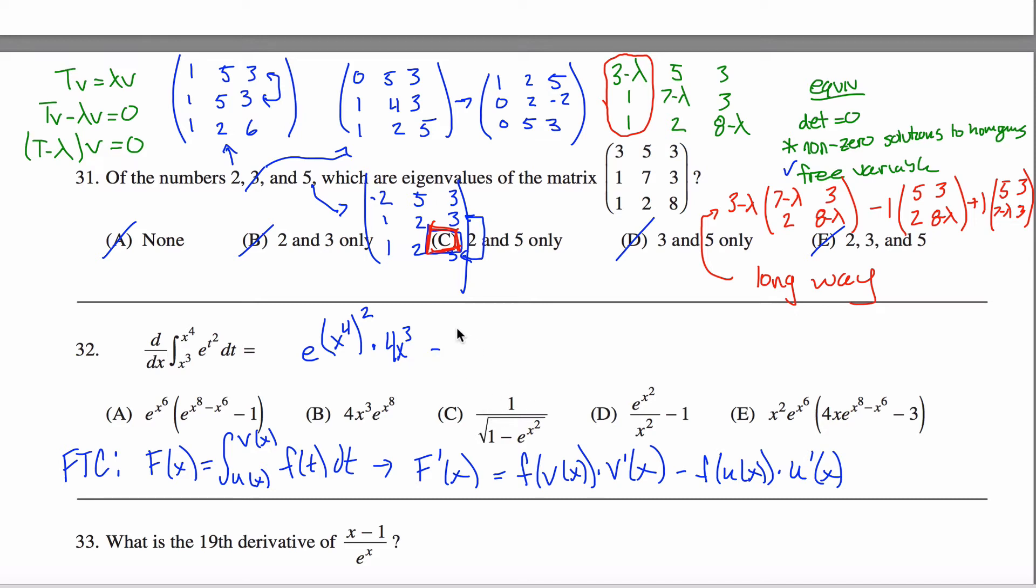And from that, I want to subtract kind of the same thing, E to the, and then instead of writing T squared, what I'll write in place of the T will be X cubed. And I want to multiply that by the derivative of X cubed, you get 3X squared right here.